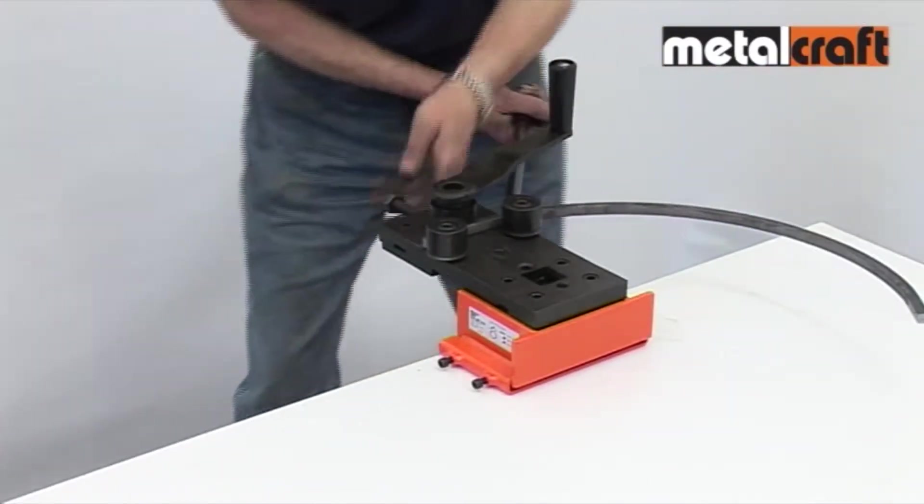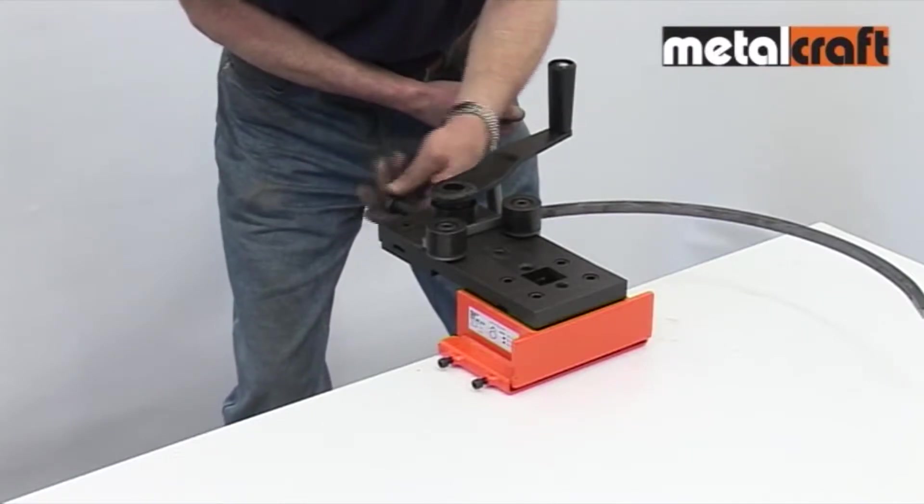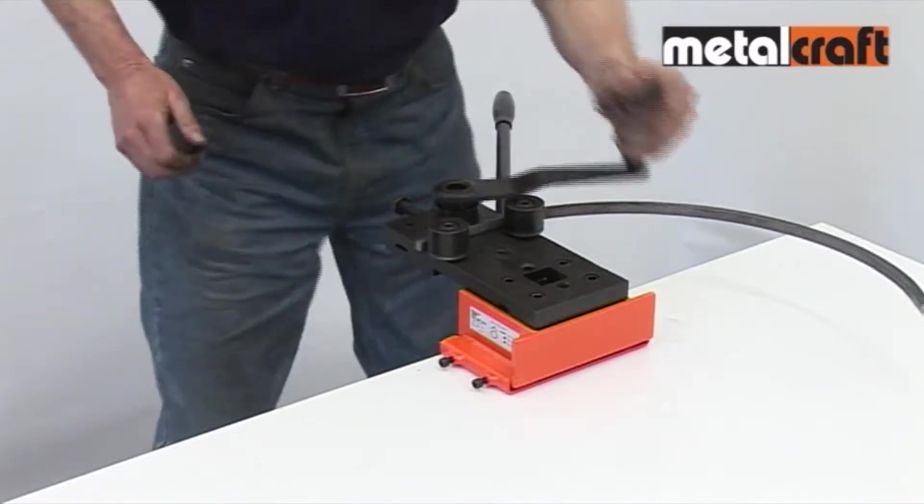Something to bear in mind is that if you happen to make a mess of a curve, you can always roll out the material back into your flat bar and try again.